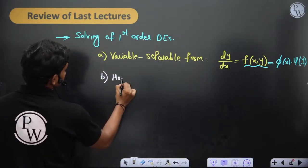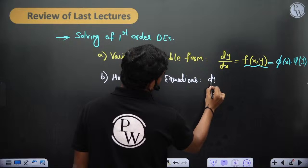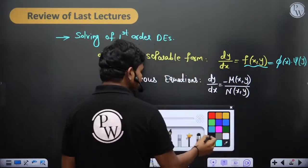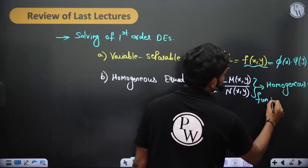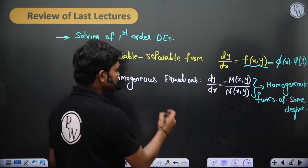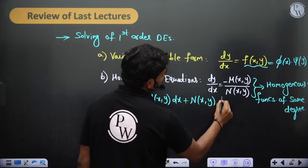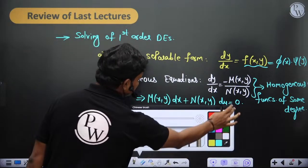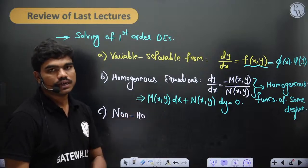Second, we also looked at homogeneous equations. In homogeneous equations, dy/dx equals minus M(x,y) over N(x,y), where M and N are homogeneous functions of the same degree. This can also be written as M dx + N dy = 0. By substituting y = vx, the homogeneous equation gets converted to a variable separable form and can be solved.